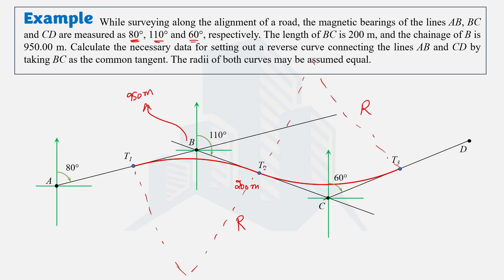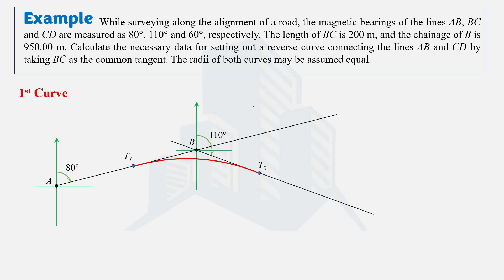Let's determine the deflection angle of the first curve. The deflection angle is the angle formed between the backward tangent and forward tangent. The bearing of AB is 80 degrees and the bearing of BC is 110 degrees. Subtracting 80 from 110 gives us 30 degrees as the deflection angle Δ1 of the first curve.